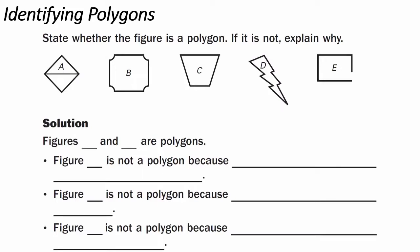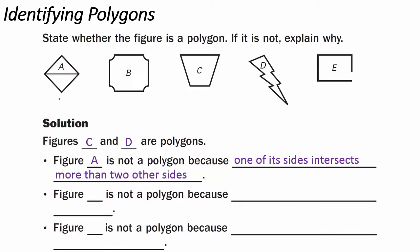Identifying polygons — we have to state whether the figure is a polygon; if it is not, explain why. In our five figures, figures C and D are polygons. Figure A is not a polygon because one of its sides intersects more than two other sides — it intersects one, two, and three. Figure B is not a polygon because some of its sides are not segments; since we have curved sides, those are not line segments and therefore B is not a polygon.